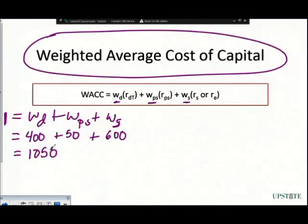We just say what is my weight on debt, it's going to be $400 million divided by our total assets of $1,050, and that tells us that we're going to have a weight on debt at 0.38.